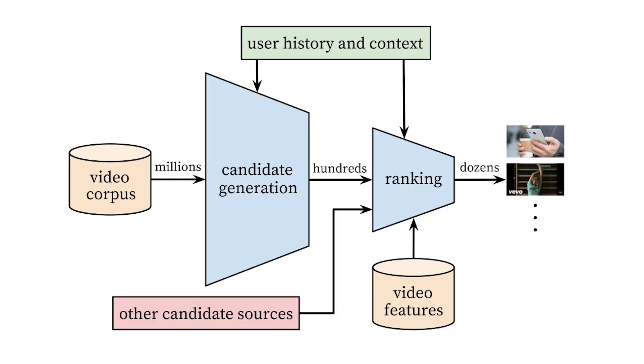For example, a YouTube ML engineer might be in charge of developing the next generation YouTube recommendation algorithm, then developing an ML pipeline around it and integrating it into YouTube such that you, the user, can end up clicking that next button to go see that next recommended video.